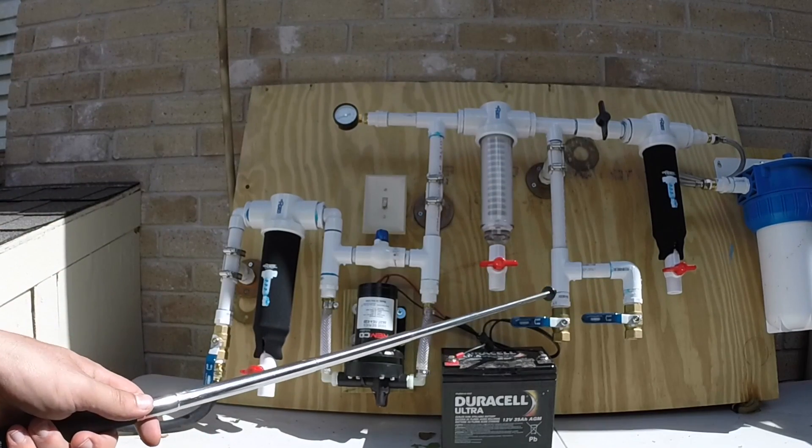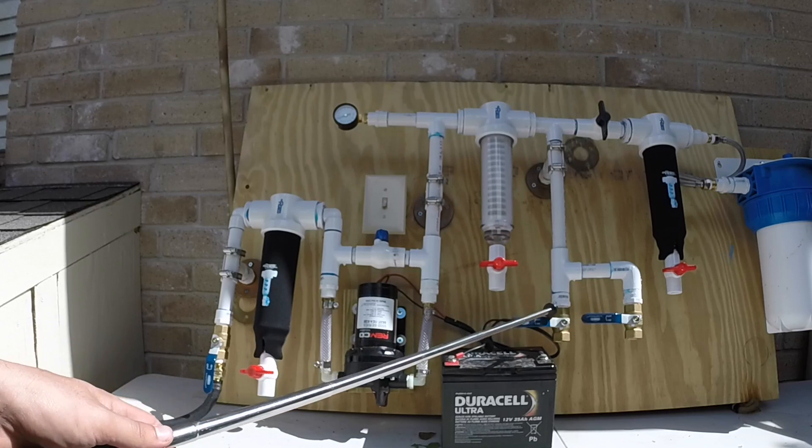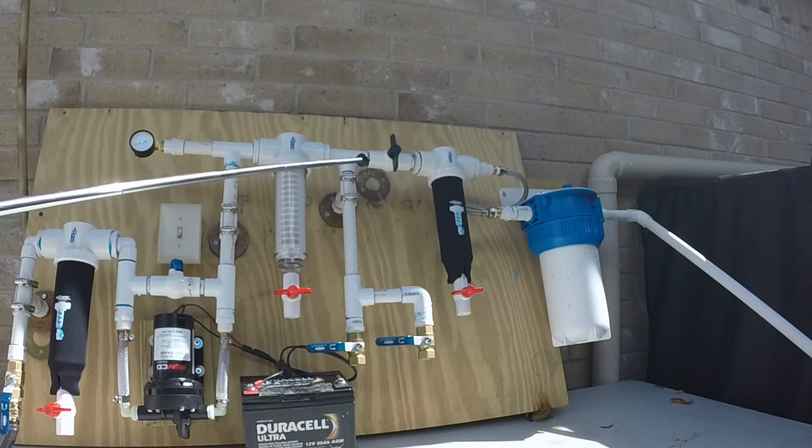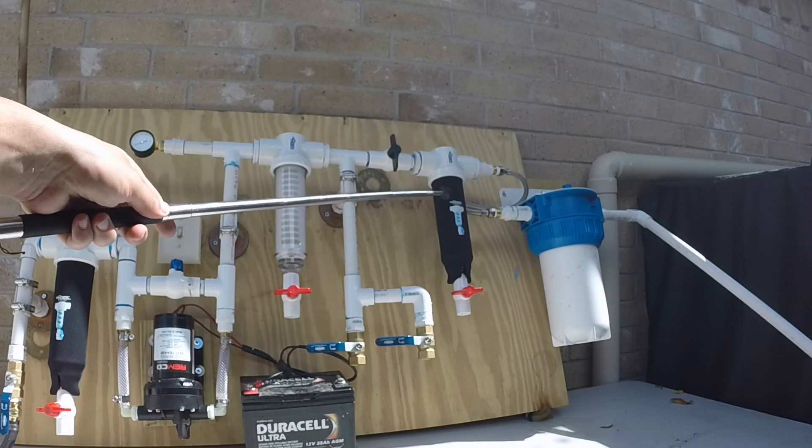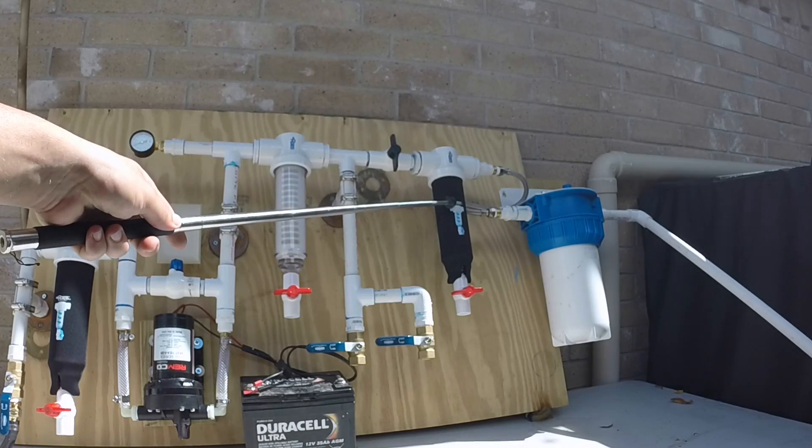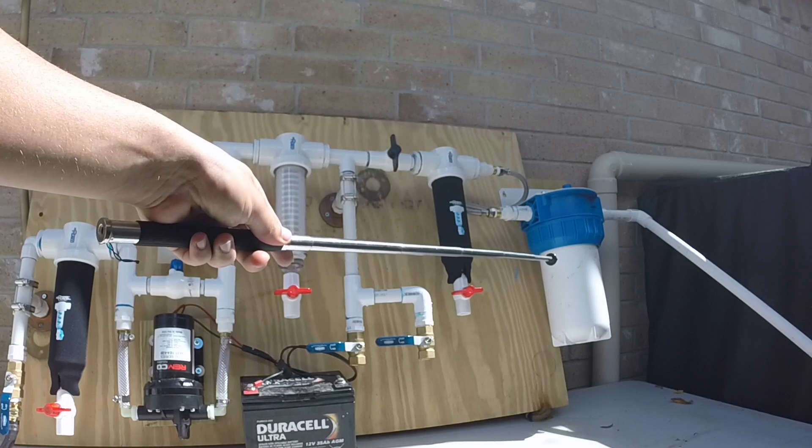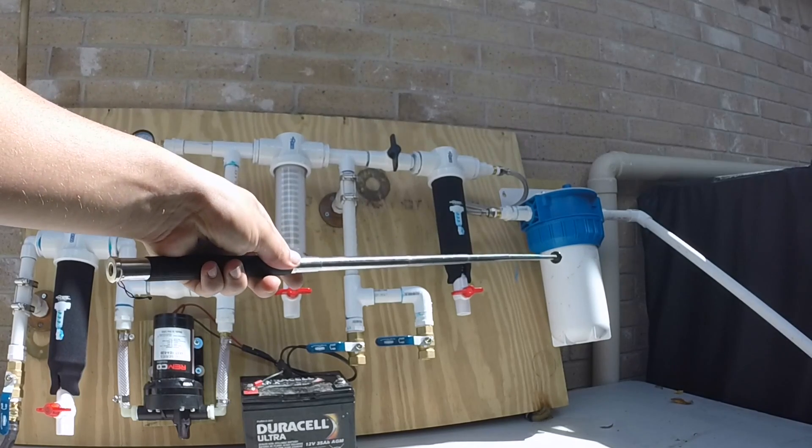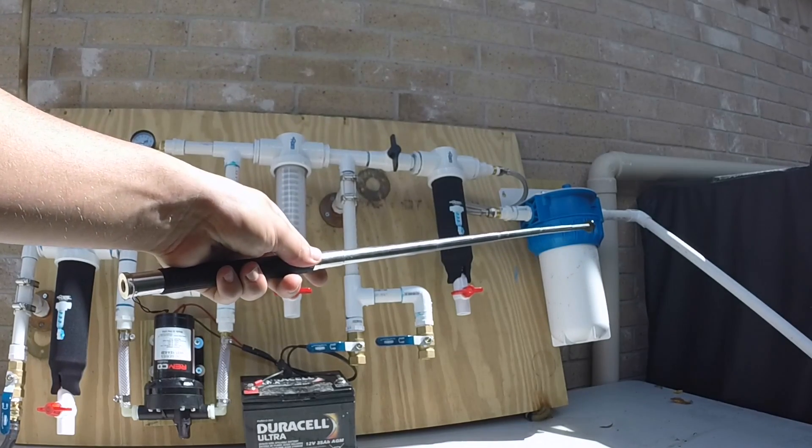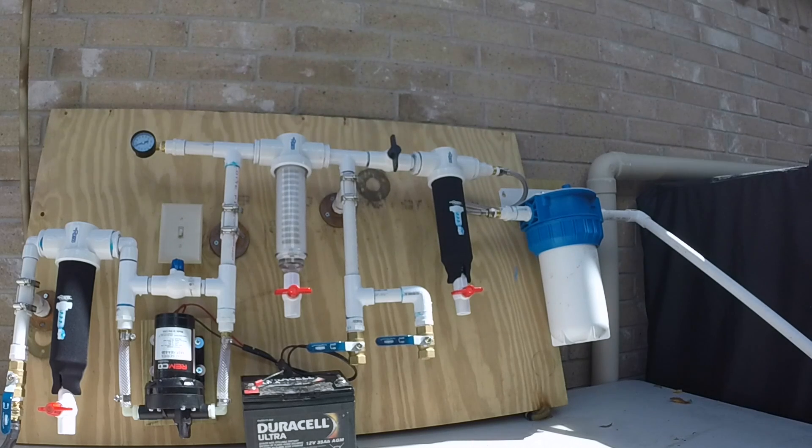This will be for like toiletry or laundry if you were using this in your home. After that the water will go through a 1000 mesh Rusco spin down filter and then after that it'll go through the Dalton Rio 2000 which is 0.9 microns. To put that into perspective a strand of hair is about 10 microns and this is less than one micron.